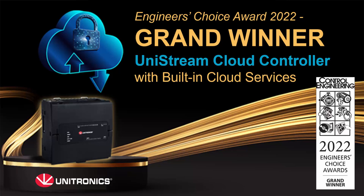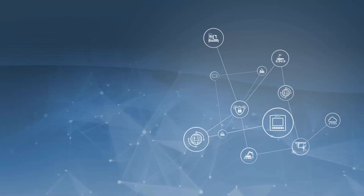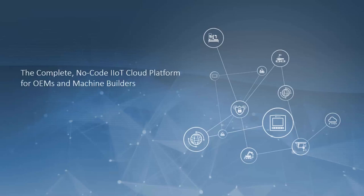I'm going to do a quick UniCloud overview and define some terminology. UniCloud is Unitronics' no-code IIoT solution for OEMs and machine builders. The UniCloud can collect data from devices in the field and show that data in a usable format on what we call dashboards. There's some additional functionality including remote access to devices in the field, scheduled events, and more.